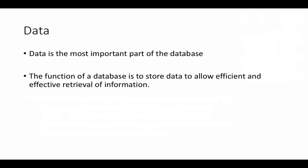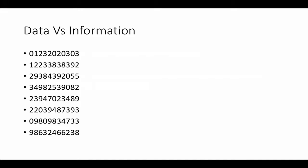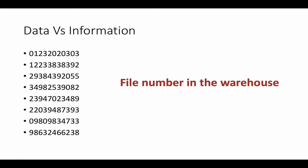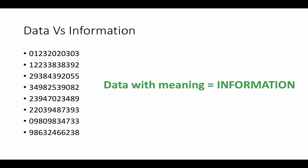This allows us to query the database to find out which students are in year 9 or year 12 this year. When we look at data versus information: here is a list of numbers — at the moment this list is just straight data. We don't know exactly what it's for, but we know it's the same data length and contains only numbers. But if we apply some meaning to it, such as account numbers for a client, that data now becomes information. Or they could be file numbers in a warehouse where we can retrieve documents. So this list of numbers has gone from being data to information because we've given data meaning, and once we give data meaning it becomes information and becomes useful.